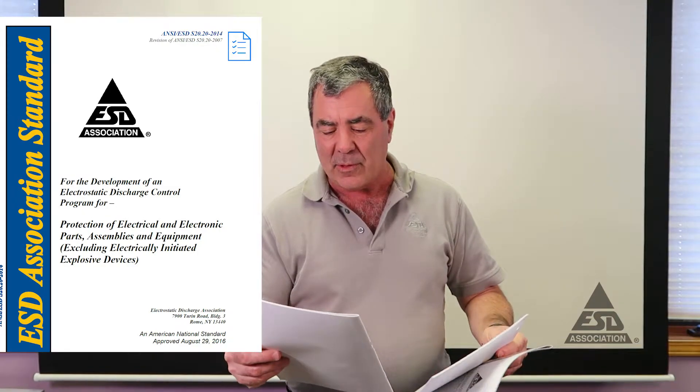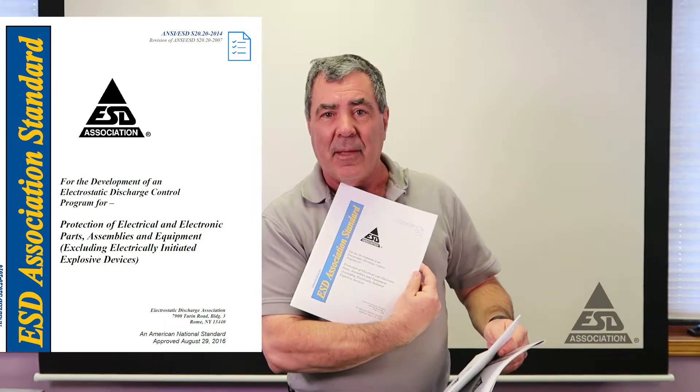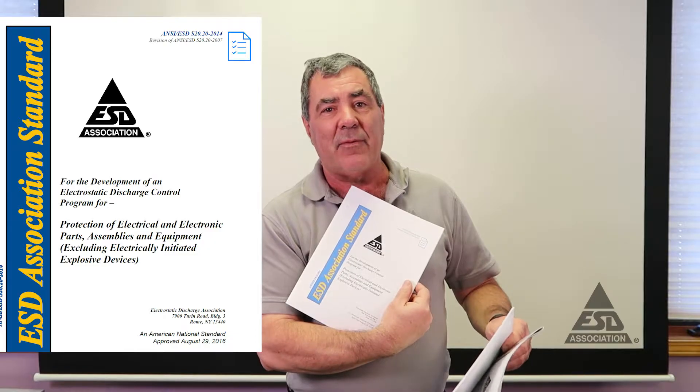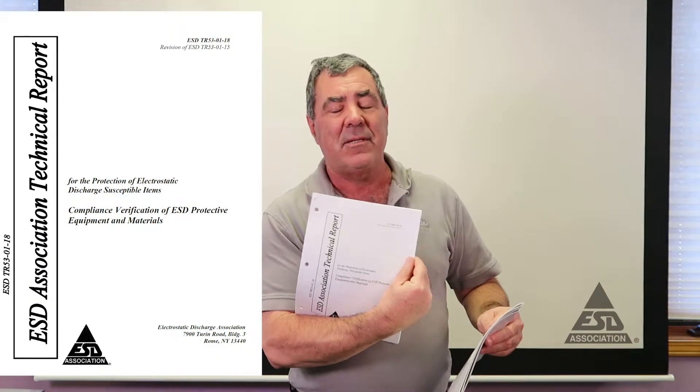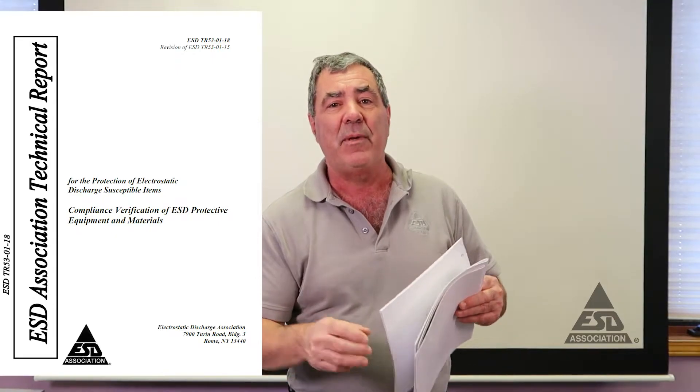The limits for seating you'll find in 2020 which is this standard. Now if you're just doing compliance verification which is TR 53, this TR says you only have to have a meter reading one order of magnitude above your limit. Since 10 to the 9th is your limit in 2020 for compliance verification, the meter only needs to be capable of measuring 10 to the 10th.